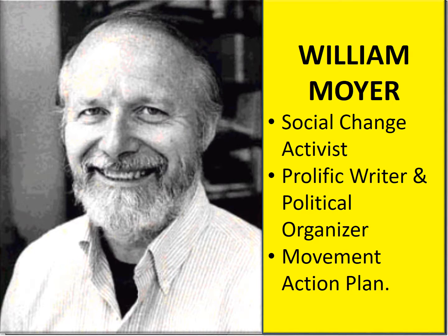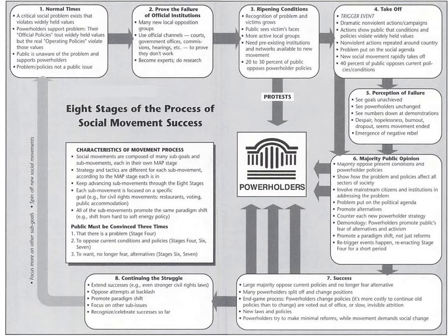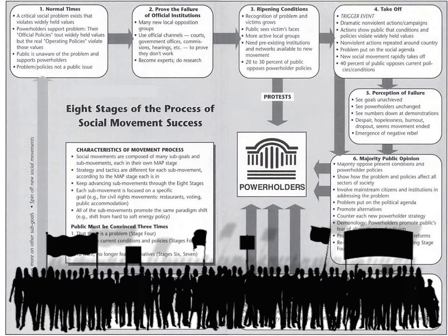William Moyer was an activist for social change and a prolific writer. In the late 1970s, he wrote a Movement Action Plan, which illustrates eight distinct stages of progress that social movements typically go through. Understanding these stages helps movement activists to choose the most effective tactics and strategies to match their movement's current stage.